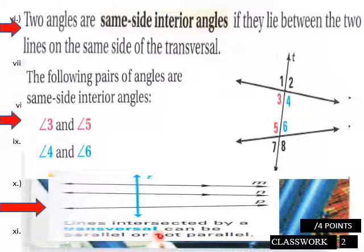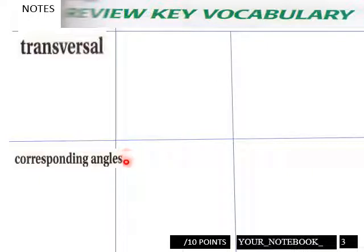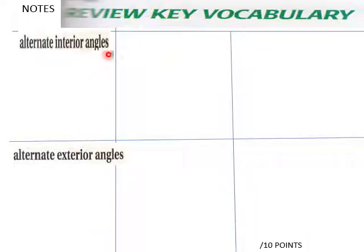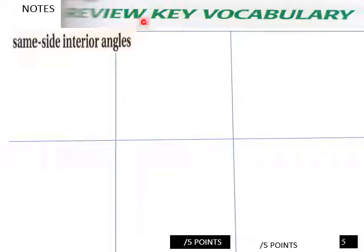Lines intersected by a transversal can be parallel or not parallel — they don't have to be parallel. Students, define transversal and corresponding angles in your own words. Then define alternate interior angles, alternate exterior angles, and same side interior angles in your own words.